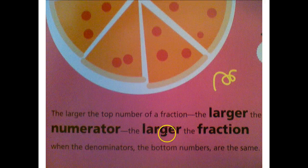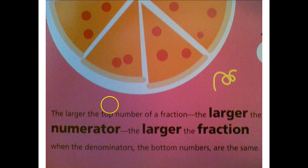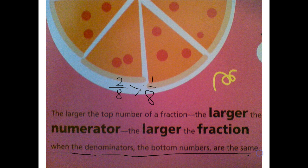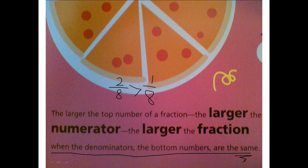This is really important. The larger the top number of a fraction, the larger the numerator, the larger the fraction. If we had two-eighths, it is larger than one-eighth. The key component is when the denominators, the bottom numbers, are the same. If these denominators are not the same, this is not necessarily true. If the denominators are the same and you have two of that same group and you're talking about same size pizzas, then two is greater than one.